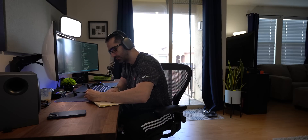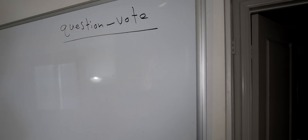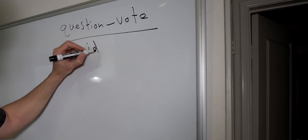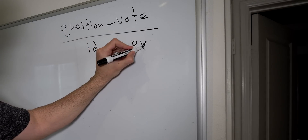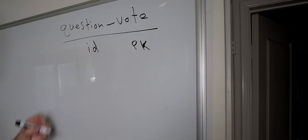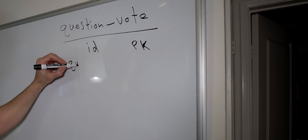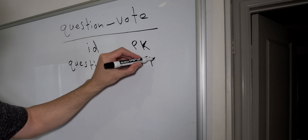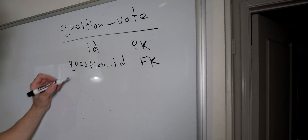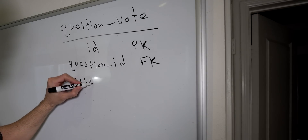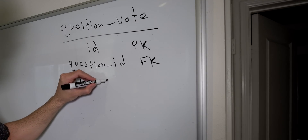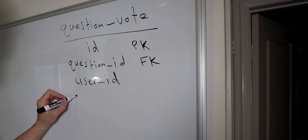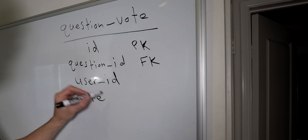We're going to call the table 'question_votes'. We're going to have an ID here which is going to be the primary key. We need the question ID, and this is going to have a foreign key to the question table that I have. We also need the user ID so we can keep track of who voted for what.